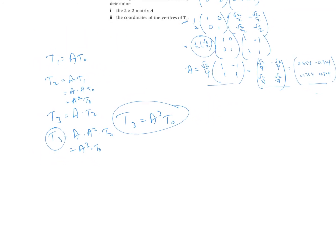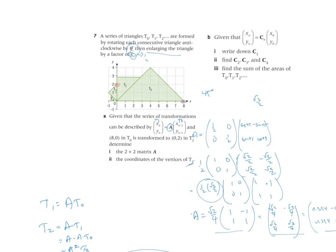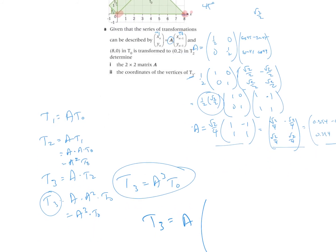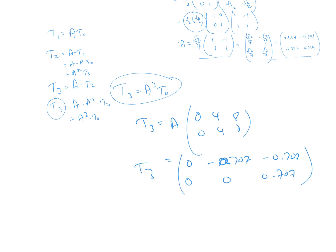Setting up the calculation: T3 = A³ times the initial triangle vertices, which are (0,0), (8,0), and (4,4). Using a calculator, A³ times those three points gives approximately: (0,0), (−0.707, 0.707), and (0.707, 0.707). These are the vertices for the third triangle T3.